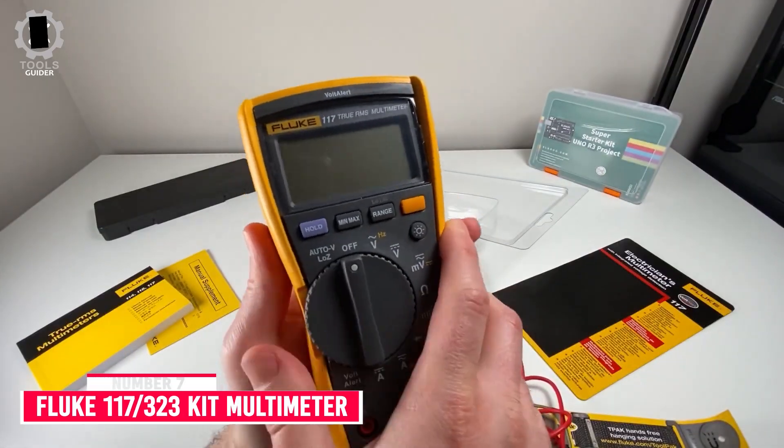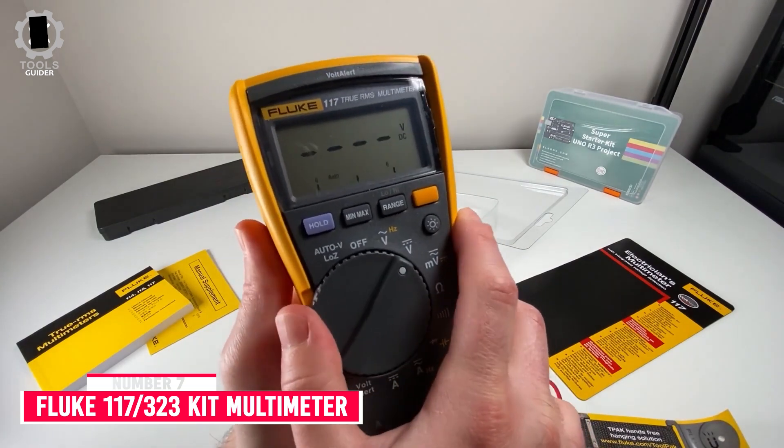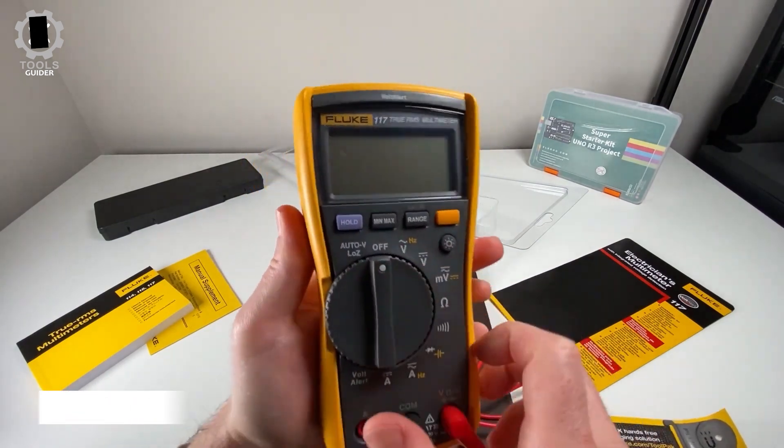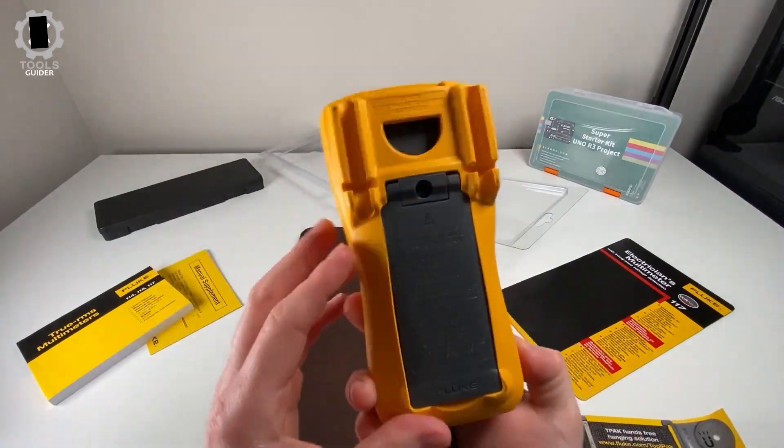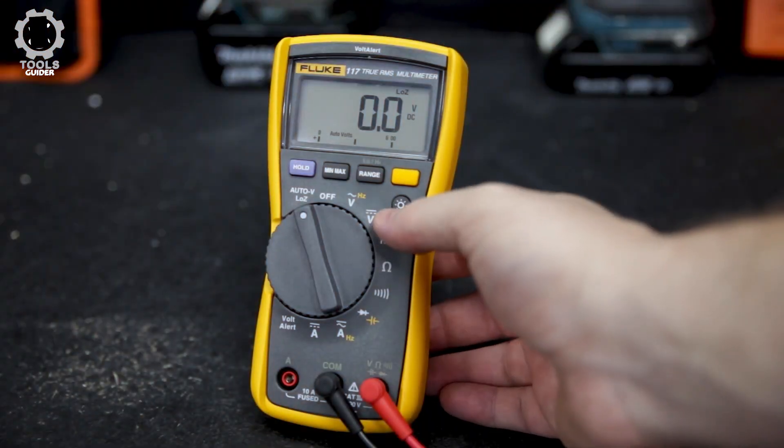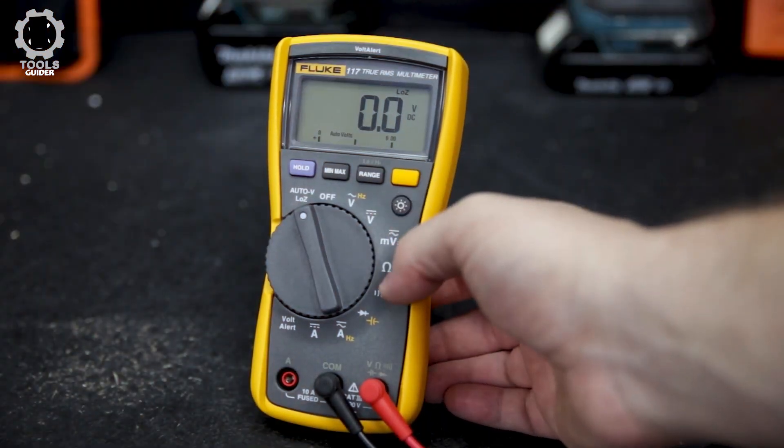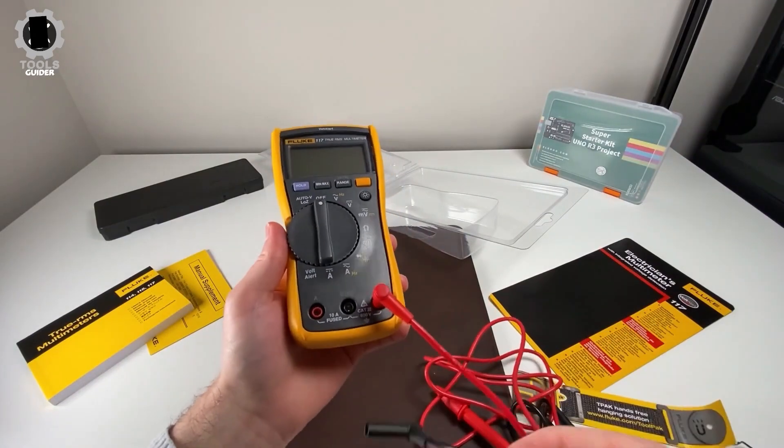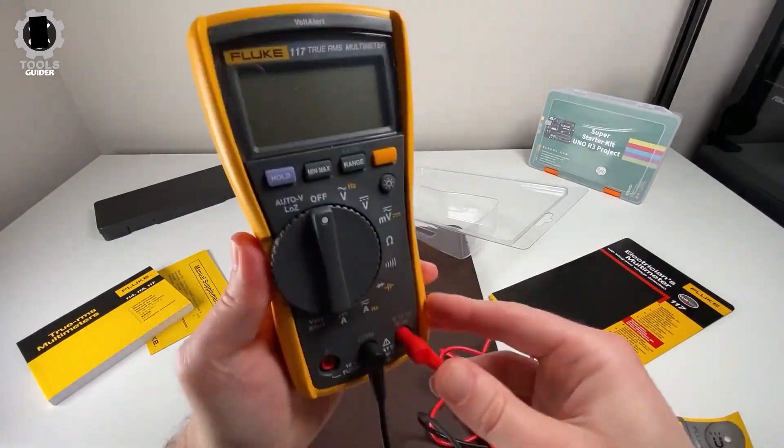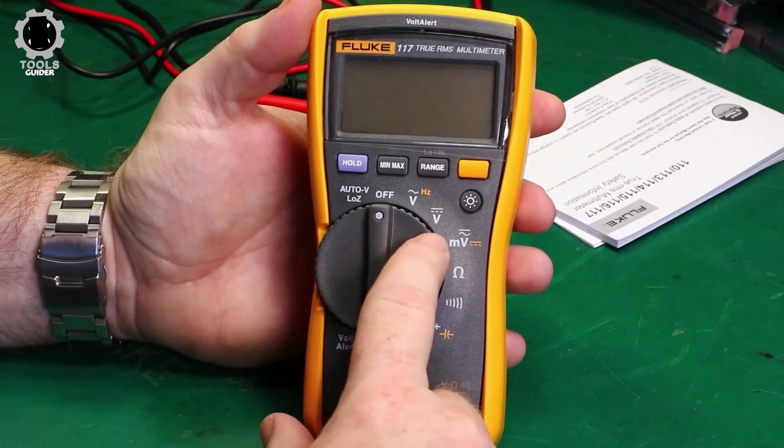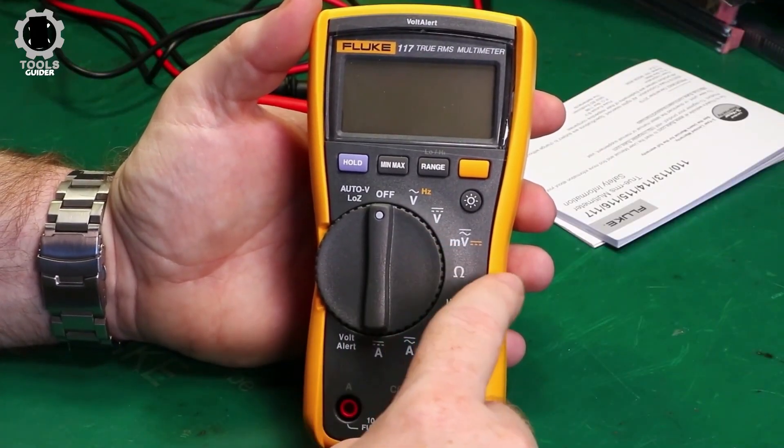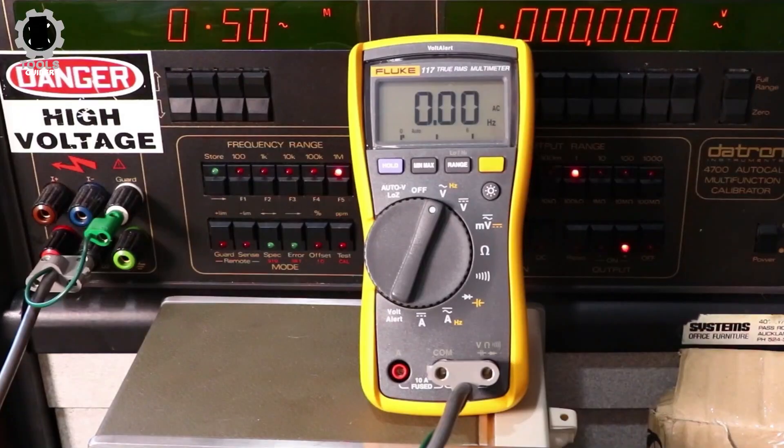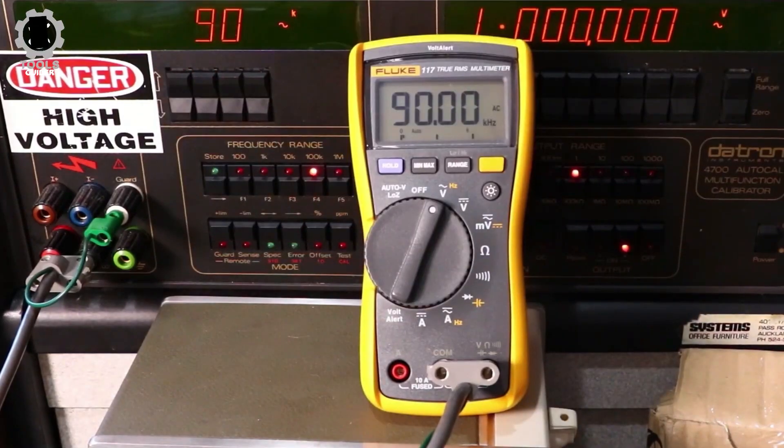Number 7. Fluke 117 323rds Kit Multimeter. The Fluke 117 323rds Kit Multimeter features voltage, amperage, resistance, continuity functions, and an automatic voltage test setting for AC or DC voltage. It also features a non-contact setting that alerts to the presence of voltage. The 323 clamp meter features jaws for testing single conductors and terminals for attaching standard leads.